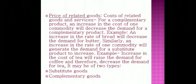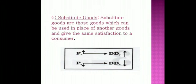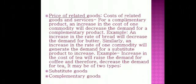Similarly, an increase in the rate of one commodity will generate an increase in demand for its substitute product. For example, an increase in the cost of tea will raise the demand for coffee. Goods are of two types: substitute goods and complementary goods. Substitute goods are those which can be used in place of another good and give the same satisfaction to the consumer — for instance, an increase in the cost of tea raises the demand for coffee and decreases the demand for tea.